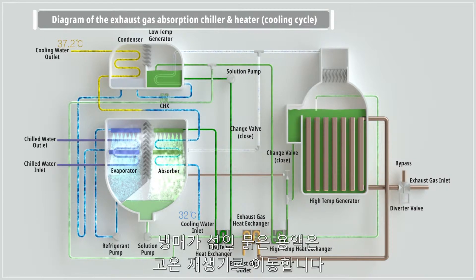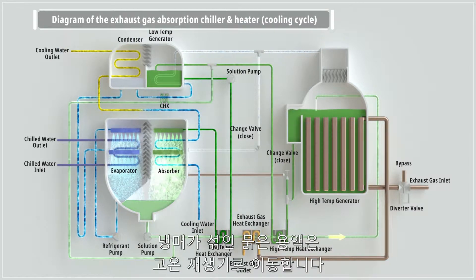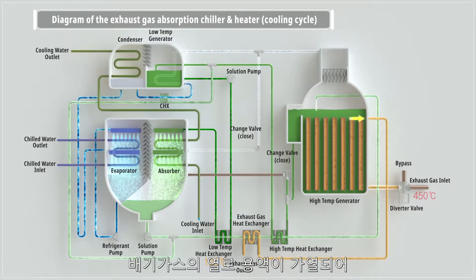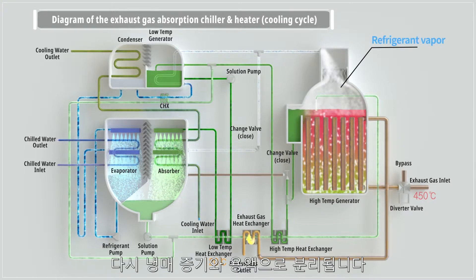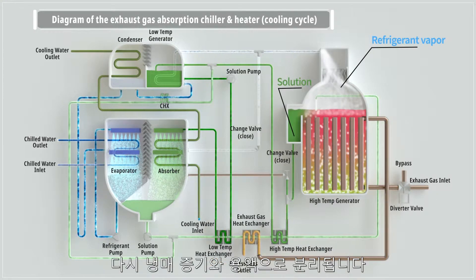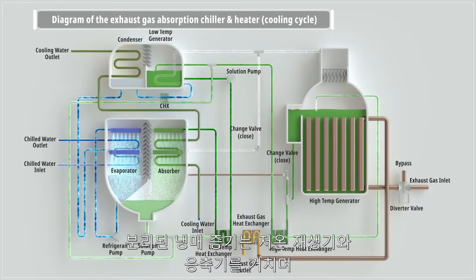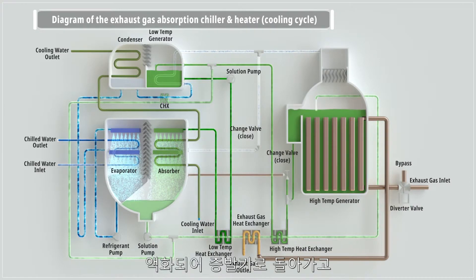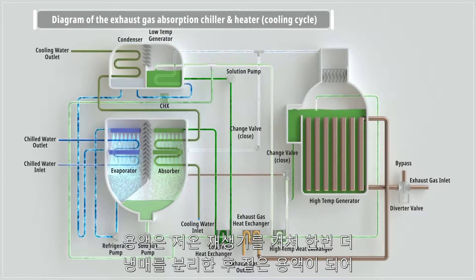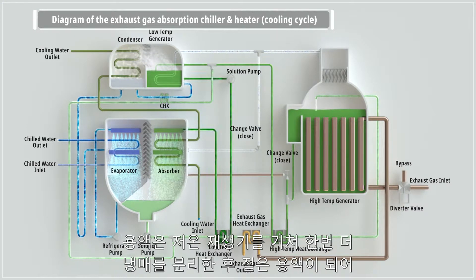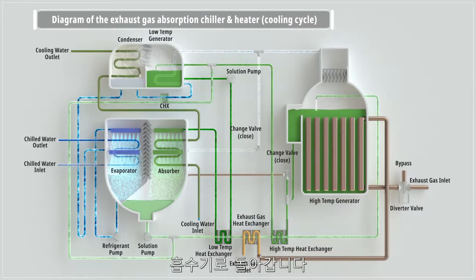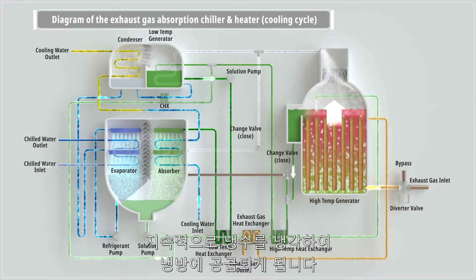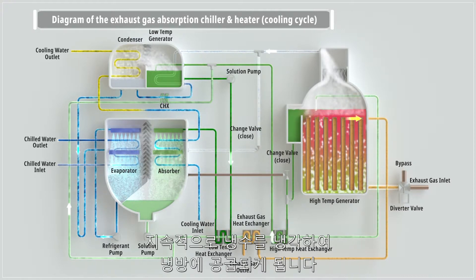The diluted solution from the absorber flows to the high temperature generator. The diluted solution in the generator is heated by exhaust gas heat, separating into refrigerant vapor and LiBr solution. Refrigerant vapor goes through the low temperature generator and condenser to be condensed and returns to the generator. The solution goes through the low temperature generator to release heat from refrigerant again and becomes concentrated solution, flowing to the absorber. By repeating this cycle, the system cools down the chilled water, which is then used for cooling.